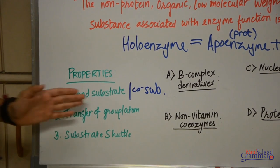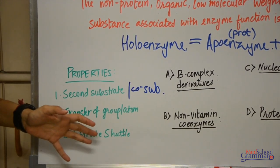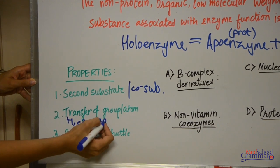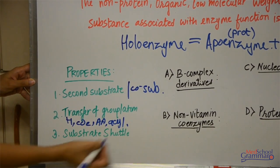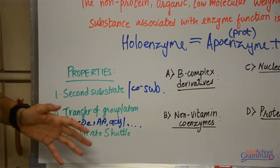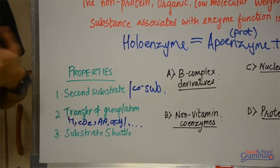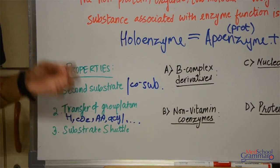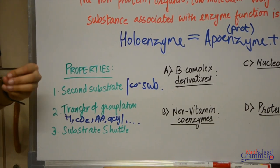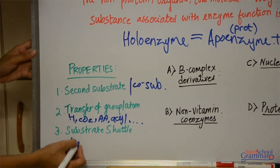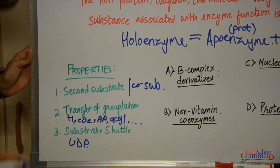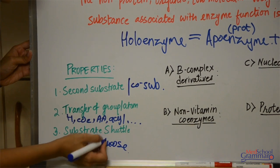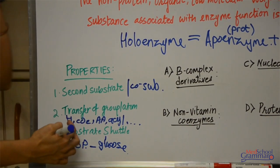Coenzymes perform the function of transferring groups or atoms during a reaction — for example, they transfer hydrogen groups, carbon dioxide, amino acids, acyl groups, etc. There is a long list of groups and atoms that they transfer during the reaction to facilitate it. They also act as a substrate shuttle — they transport the substrate from one part of the cell to another. For example, the coenzyme UDP transports glucose by forming a UDP-glucose complex.